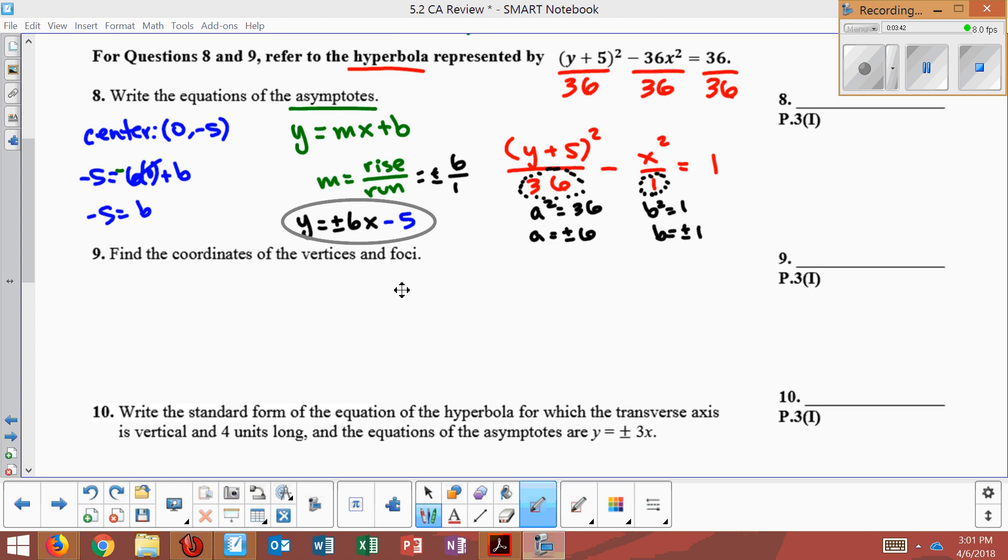I'm going to find the coordinates of the vertices and foci. So the vertices are found, if you remember, by adding the a values. It's plus or minus a to the center. So I take my center, which was 0, negative 5. And since the a is underneath the y, I would add it to the y value. So 0, negative 5, and it would get plus or minus this 6. This is for the vertices. Which means my first vertices would be 0 and then negative 5 plus 6, which would be positive 1. And the other would be 0 and then negative 5 minus 6 more, which is negative 11. That would be my vertices here.